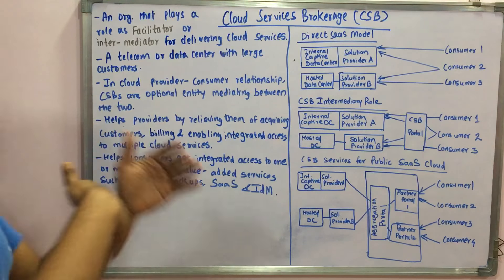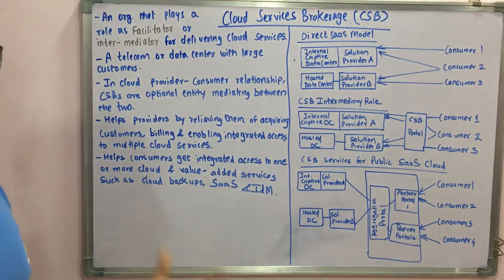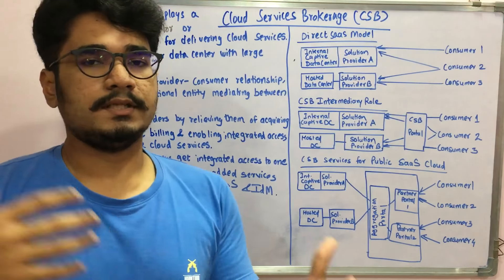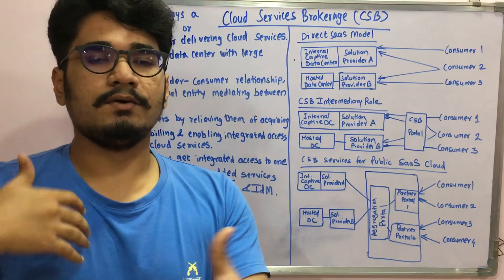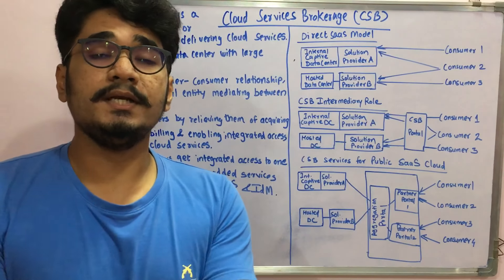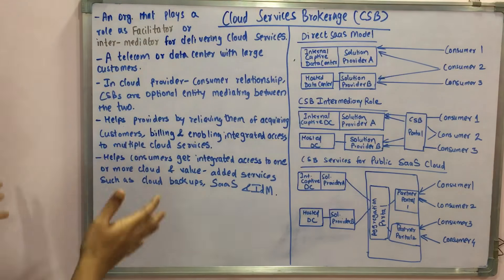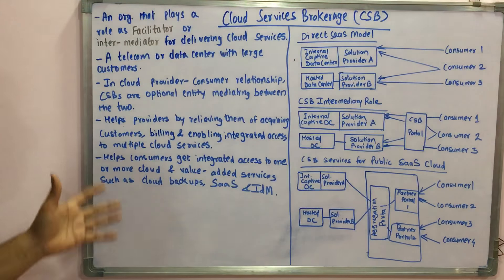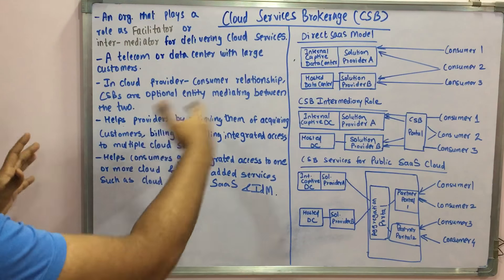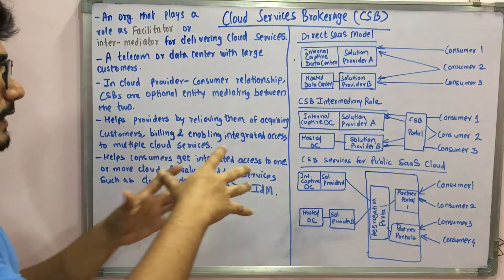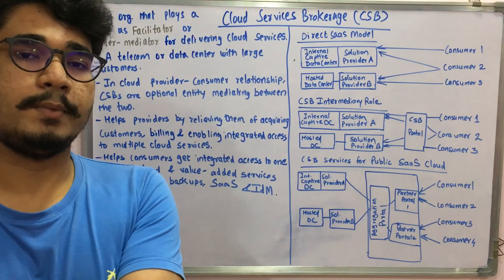In a cloud provider-consumer relationship, a provider delivers services directly to a consumer — for example, I provide video services to you. In this one-to-one communication, CSBs are an optional entity mediating between the two. When there is no CSB sitting between provider and consumer, that mediator role produced by the CSB is of no use.